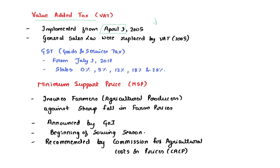There is less probability of this VAT question being asked now, as VAT replaced the General Sales Tax in 2005. Presently, for indirect taxes we have GST, which was implemented from July 1st, 2017. GST has five slabs: 0%, 5%, 12%, 18%, and 28%.